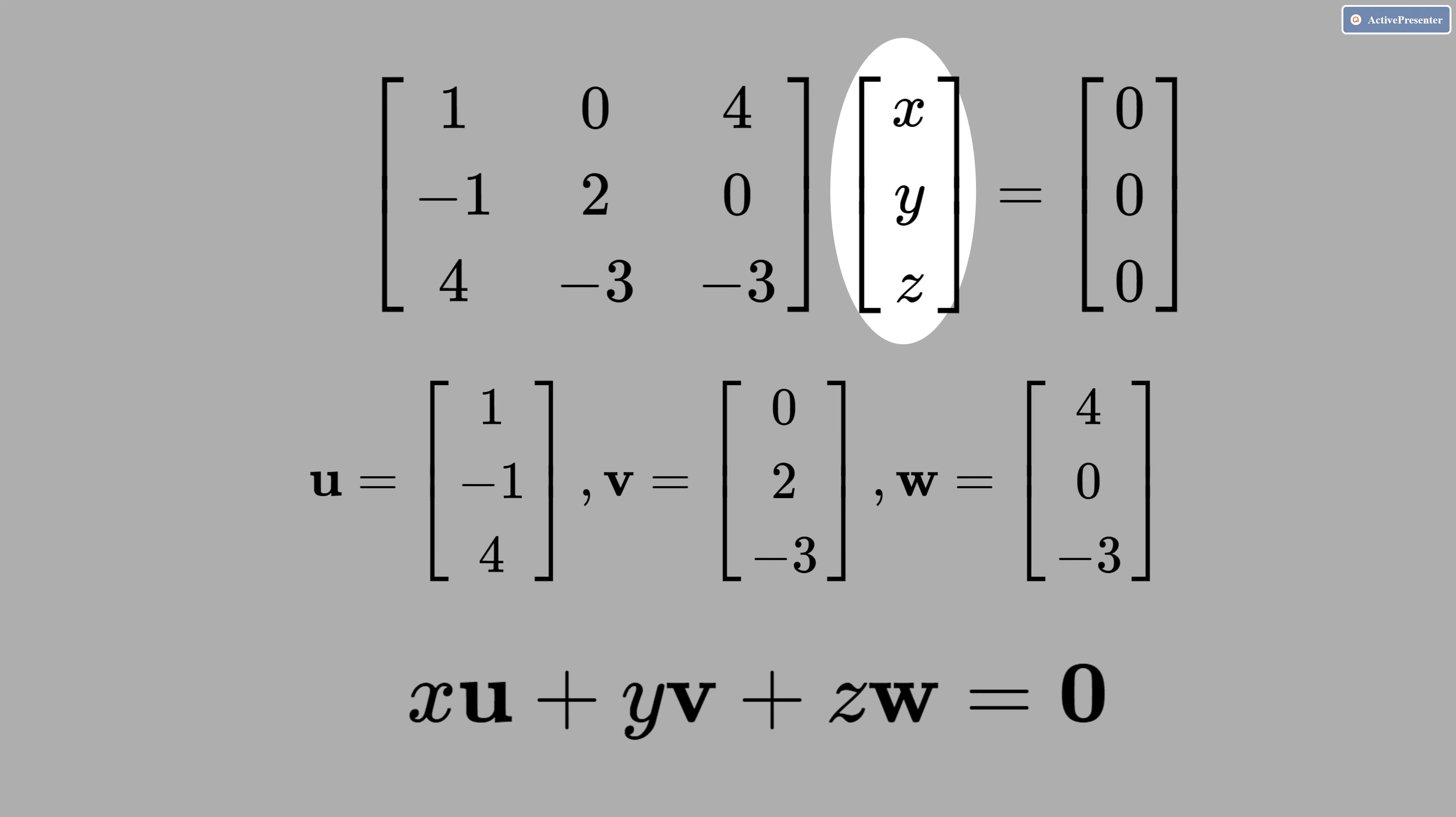How we can see that this column x, y and z is equal zero? Only if I can remove this matrix here. That means only if there is an inverse for this matrix.